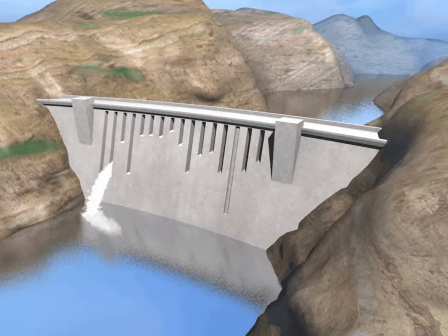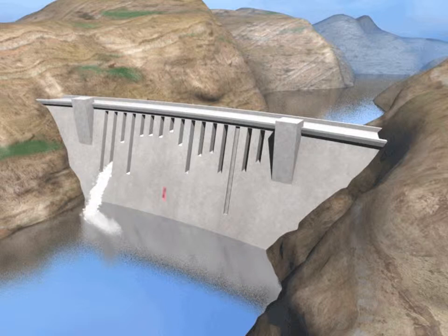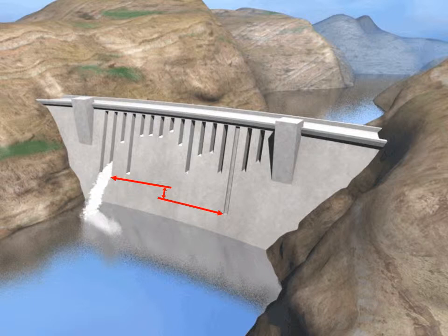We've fixed the biggest hole, but the dam still leaks. In this analogy, all the researchers would be able to measure in this repair is the difference between the first limiting nutrient — the biggest hole in the dam — and the next limiting nutrient, the second biggest hole in the dam.